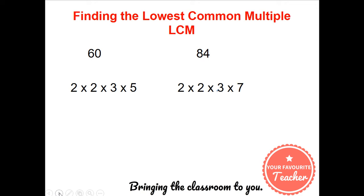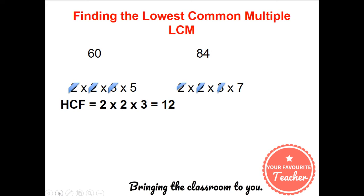After finding the prime factors we then find the highest common factor by first finding all the common numbers in both. In this case I'm scratching them off one by one and using those numbers by multiplying them to get the highest common factor. In this case it's 2 times 2 times 3 which is 12. So the highest common factor of 60 and 84 is 12.